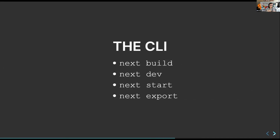The CLI is similarly simple. There's `next build`, which builds your site; `next dev`, which runs a development server; `next start`, which runs a production server; and `next export`, which exports your entire Next.js application as a static site. Typically you don't have to do much with most of these — you'll run `next dev` to work on it locally, and whatever host you use, whether Netlify, AWS Amplify, or Vercel, they will be the ones running build, start, and export.